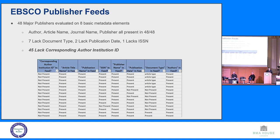John McDonald at EBSCO looked at publisher feeds and examined eight basic metadata elements pulled from 48 different publishers. Author, article name, journal name, and publisher are all present across all 48. But seven of them lack document type, two lack publication date, one lacks an ISSN, and 45 of them lack the corresponding author institution ID. So EBSCO is not receiving the corresponding author institution ID from these publisher feeds.